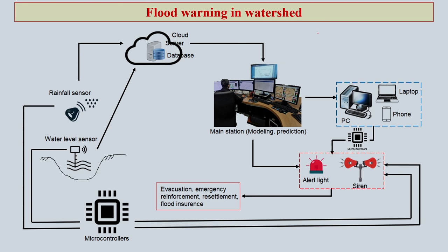Next is the early warning system, EWS. Early warning systems are a very important aspect for anything — whether it is flood, drought, cyclone, or any kind of natural calamity — EWS is very critical for saving life and other resources.